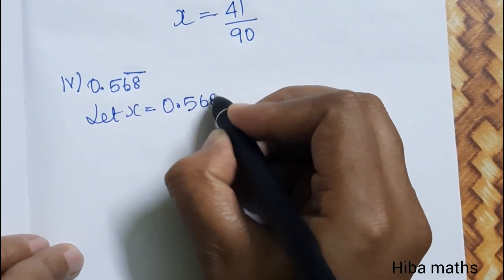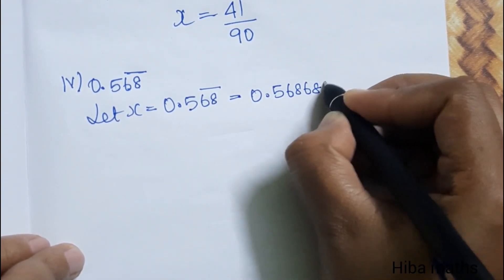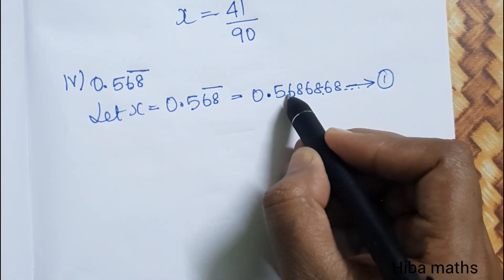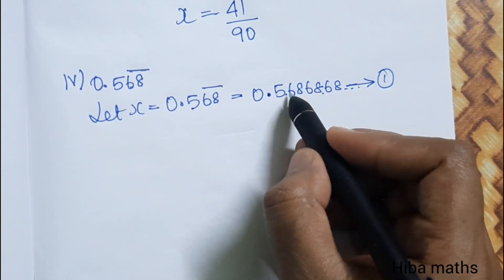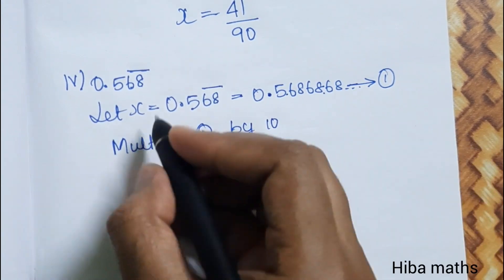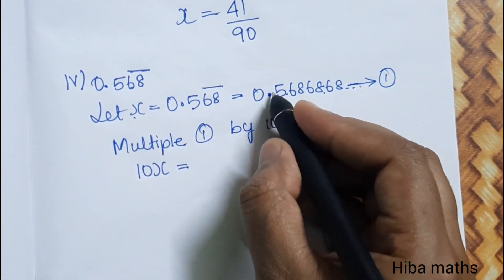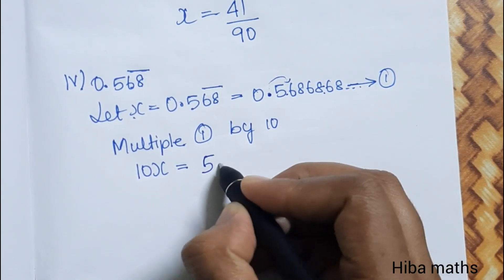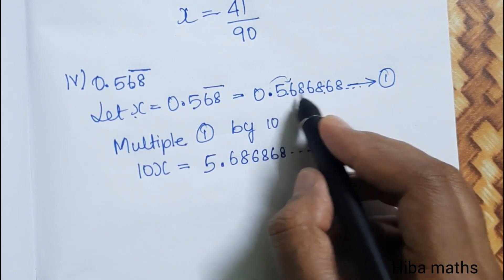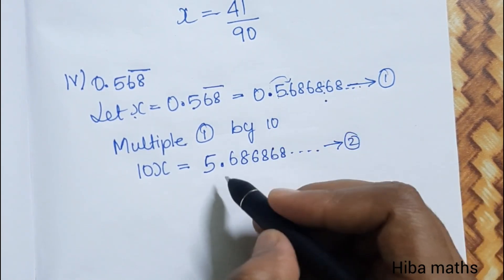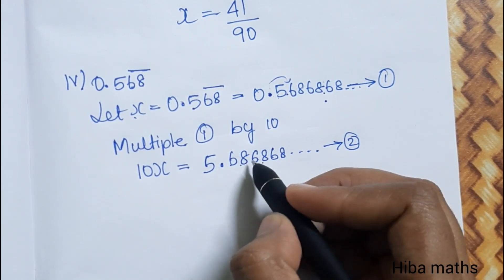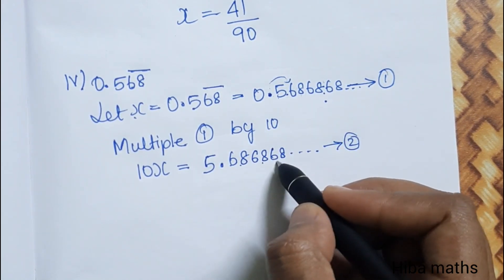0.568 bar. Multiply equation 1 by 10: 10x equals 5.6868... This is equation 2. The repeating block is 68.